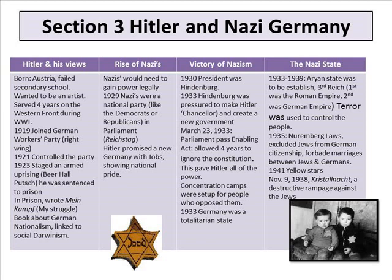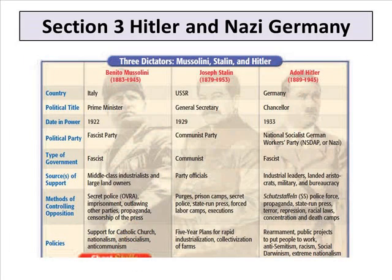The Nazi state — an Aryan state — was to be established: the Third Reich. The First Reich was the Roman Empire, the Second Reich was the German Empire. Terror was used on the people. The Nuremberg Laws excluded Jews from German citizenship and prohibited marriages between Jews and Germans. Yellow Stars marked with the word 'Jude' marked people of Jewish descent. Kristallnacht was a destructive rampage against the Jews — the Night of Crystal, named for the breaking of glass that happened that night.